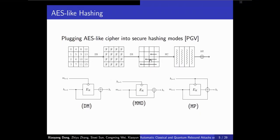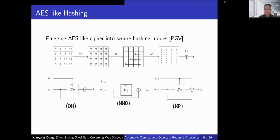This paper focuses on AES-like hashing, built by plugging AES-like ciphers or permutations into the famous PGV models such as DM, MMO, and MP modes.